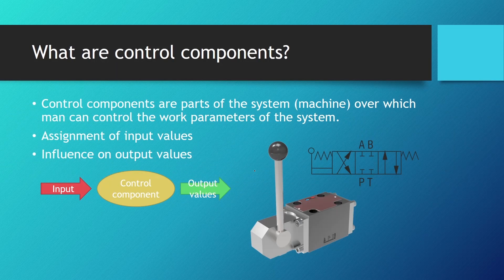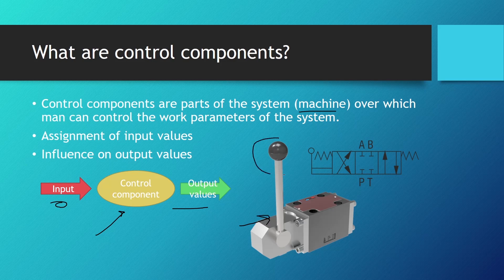What are control components? Control components are parts of the system or machine over which man can control the work parameters of the system. We assign some input values — they can be on or off, or we can choose a certain direction or amount of fluid flow — and then the control components realize those input values to output values or parameters that we wanted to change in the system. Here we can see a directional control valve operated by hand; we can see the lever. We input the command using our hand, and the directional control valve gives the direction to the fluid flow.